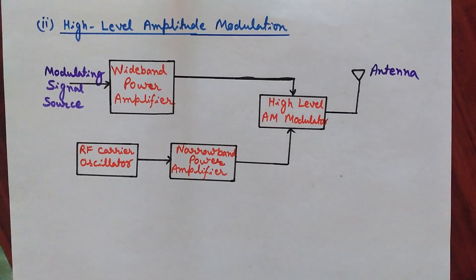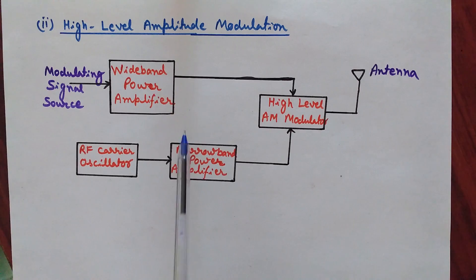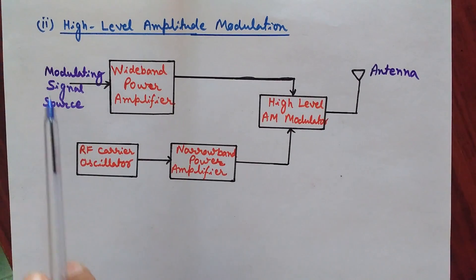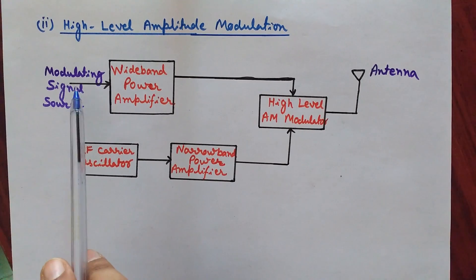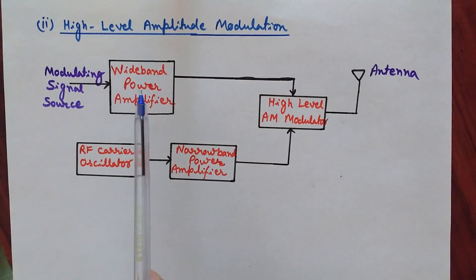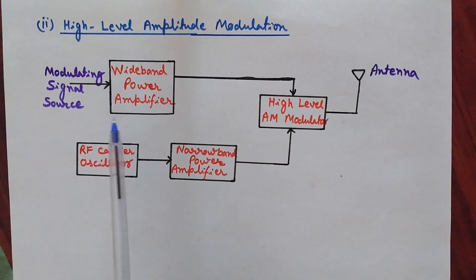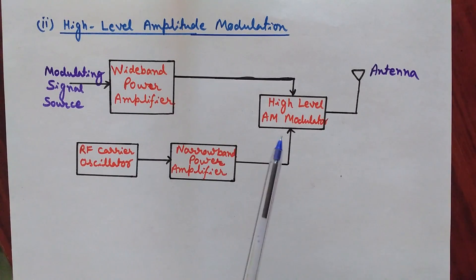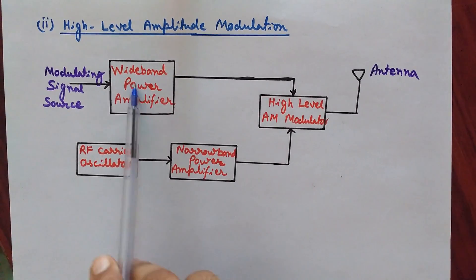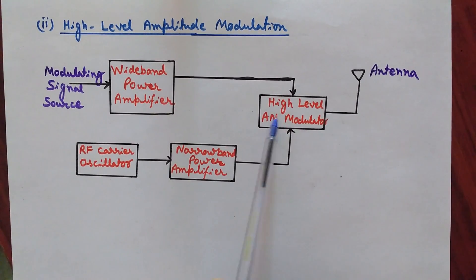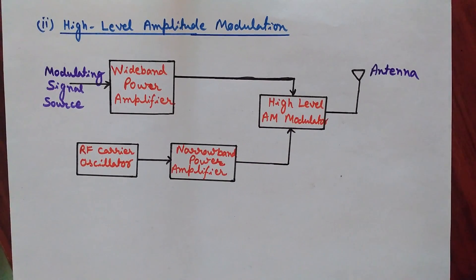In low-level AM, the carrier wave and the modulating signal are applied directly to the modulator without pre-amplification — amplification occurs after the AM modulated wave is obtained. In high-level AM, both the carrier wave and the modulating signal must be amplified before being applied to the high-level AM modulator.